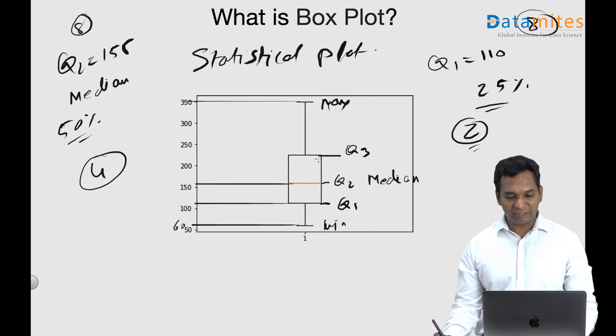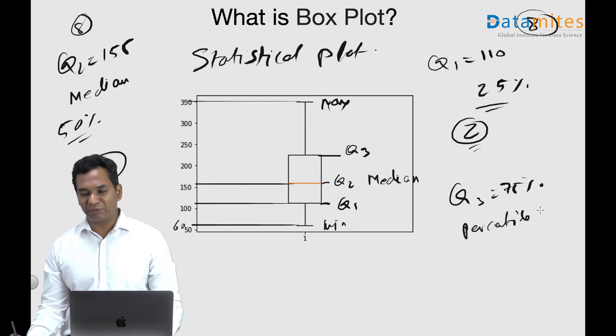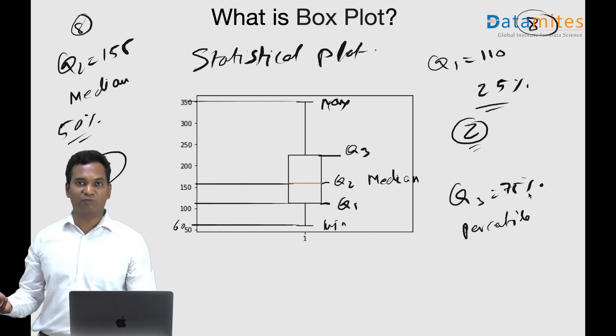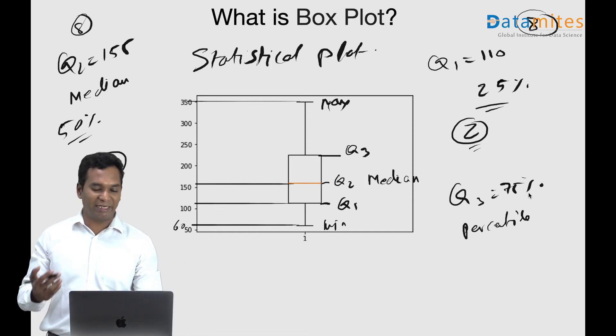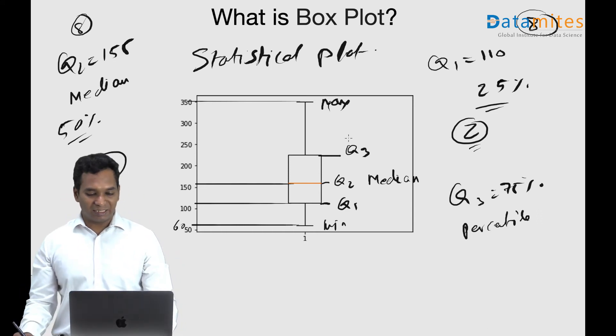In a similar manner, Q3 means quartile 3, the 75 percentile mark, which means 75 percent of your total number of people in the distribution are below this number. Only 25 percent are above this number.